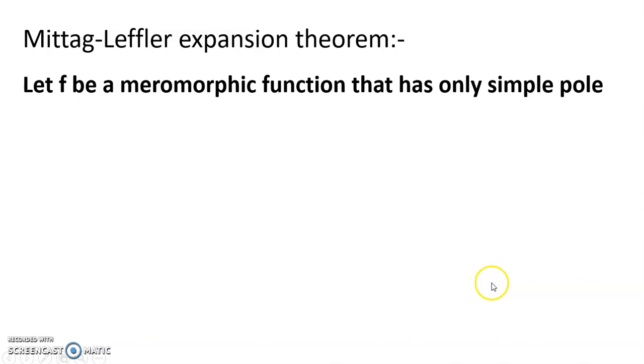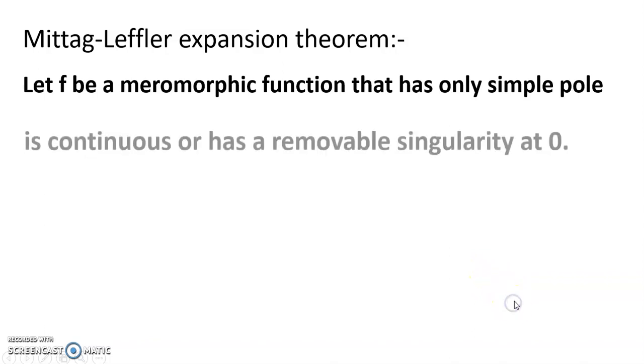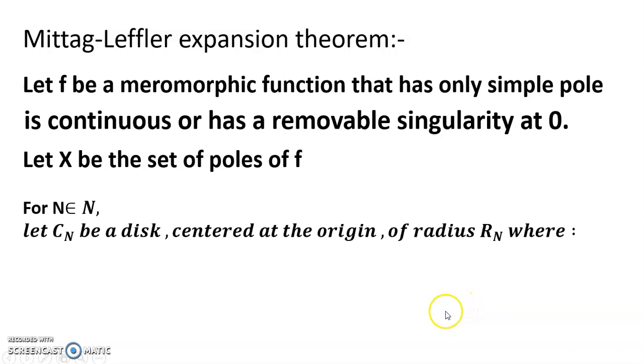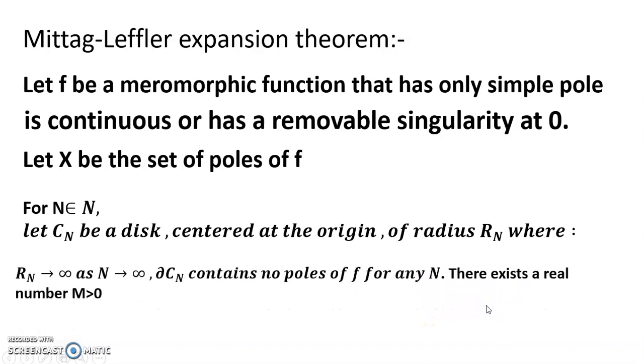Let f be a meromorphic function that has only simple poles, is continuous or has a removable singularity at 0. Let x be the set of poles of f. For capital N belongs to script N, let cn be a disk centered at the origin of radius rn, where rn tends to infinity as n tends to infinity. And boundary of cn contains no poles of f for any n.